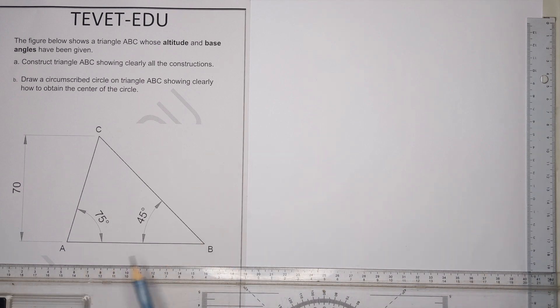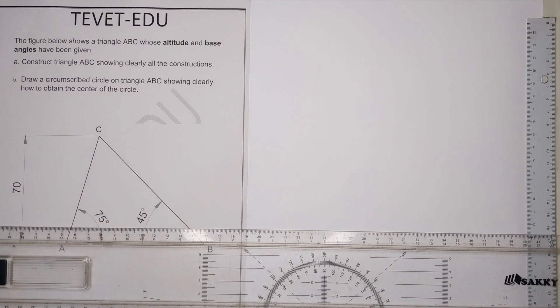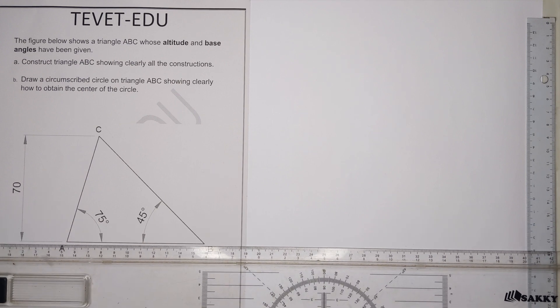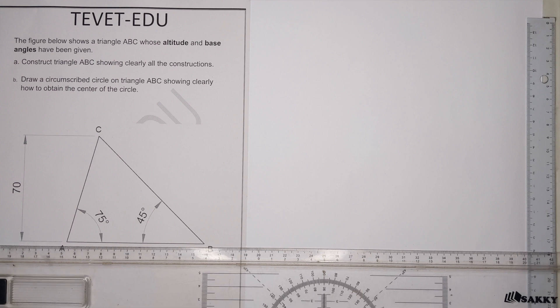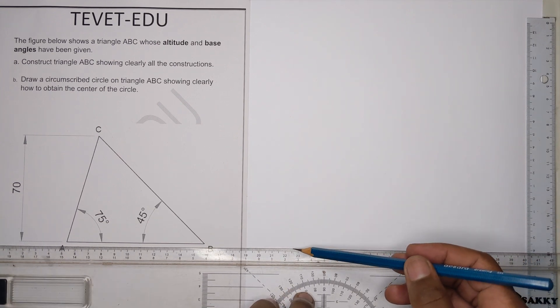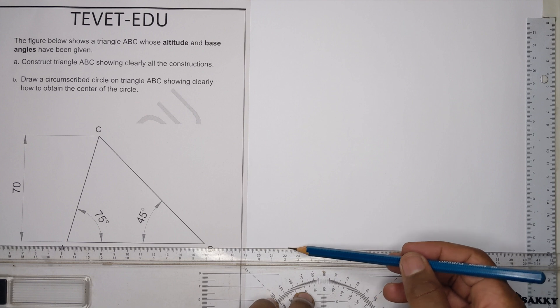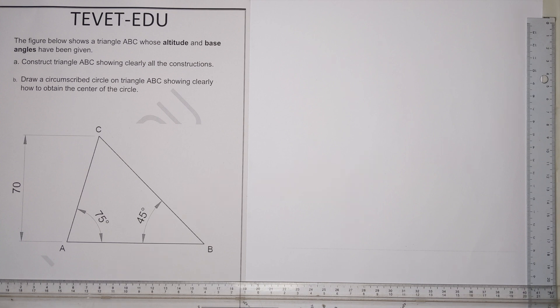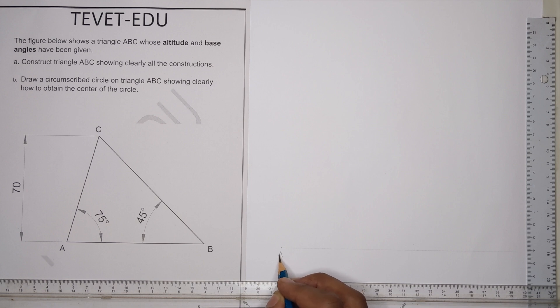We start with a fence line, and we pick a point - point A. So we start with a fence line since we don't know the actual length, and from that fence line we'll pick the first point which is point A, even though we do not know where point B is yet.